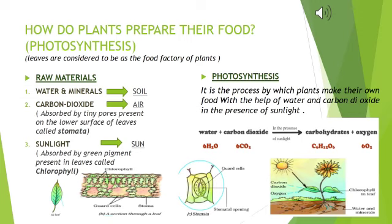Now we are going to study the process of photosynthesis. But before that, let us consider: where is the food prepared in plants? The answer is the leaves. Leaves are known as the food factory of the plants. All the raw materials required in the process of photosynthesis must reach the leaves, and all the food prepared by the plants is prepared in the leaves only.